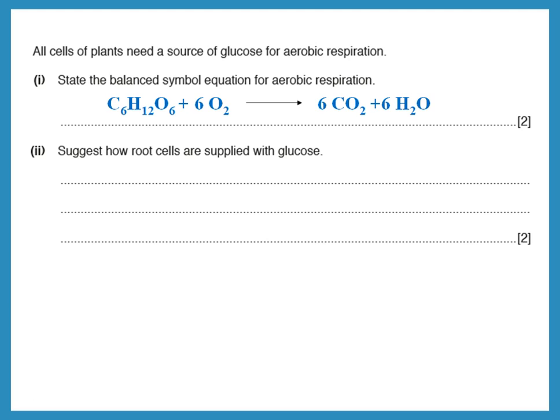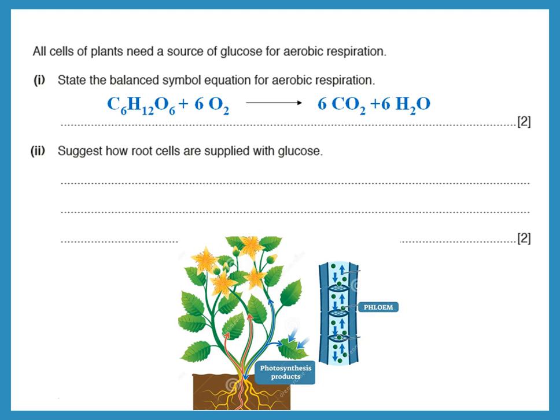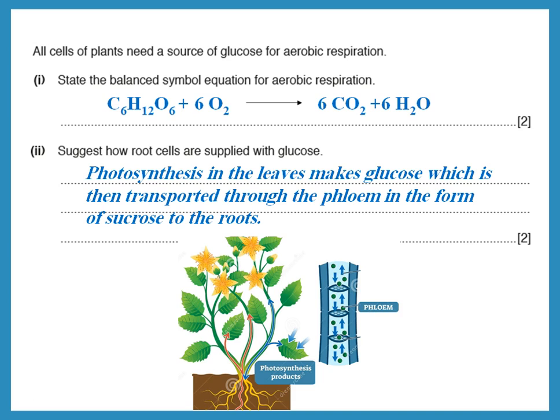Root cells get their glucose from photosynthesis. The plant takes light, carbon dioxide, and water to make glucose in the leaves. This glucose is transported through the phloem in the form of sucrose to the roots, which then use it for their own respiration.